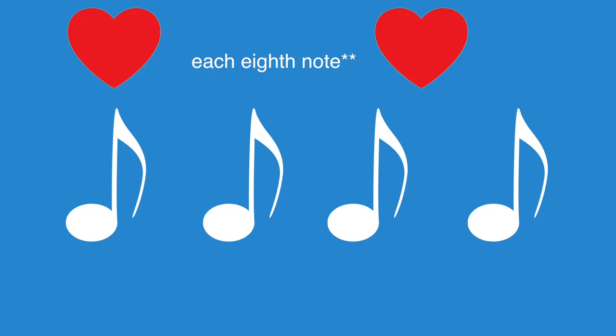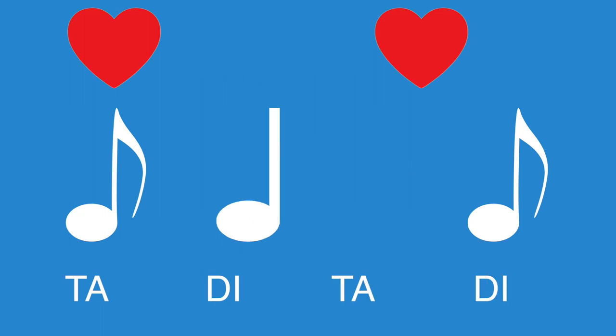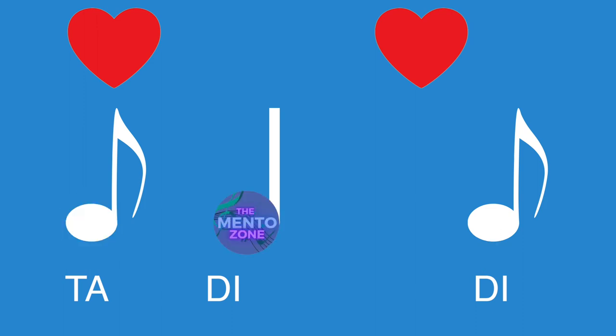Here's how we would play the rhythm using takadimi syllables. First, we write down the syllables for each note, so we have: ta, di, ta, di. Then we figure out which eighth notes the rhythms fall on and only say those syllables. I notice that a rhythm starts on the first ta, the next di, and there's no rhythm that lines up with the ta after that, so we're just not going to say that one. And then after that we have the last di. So we're left with ta-di-di.